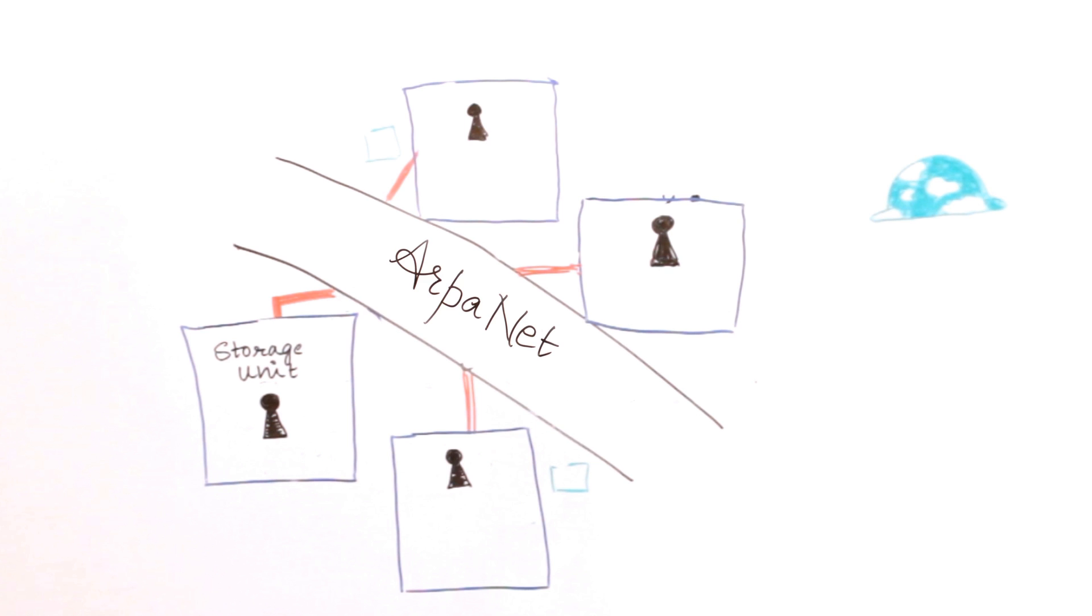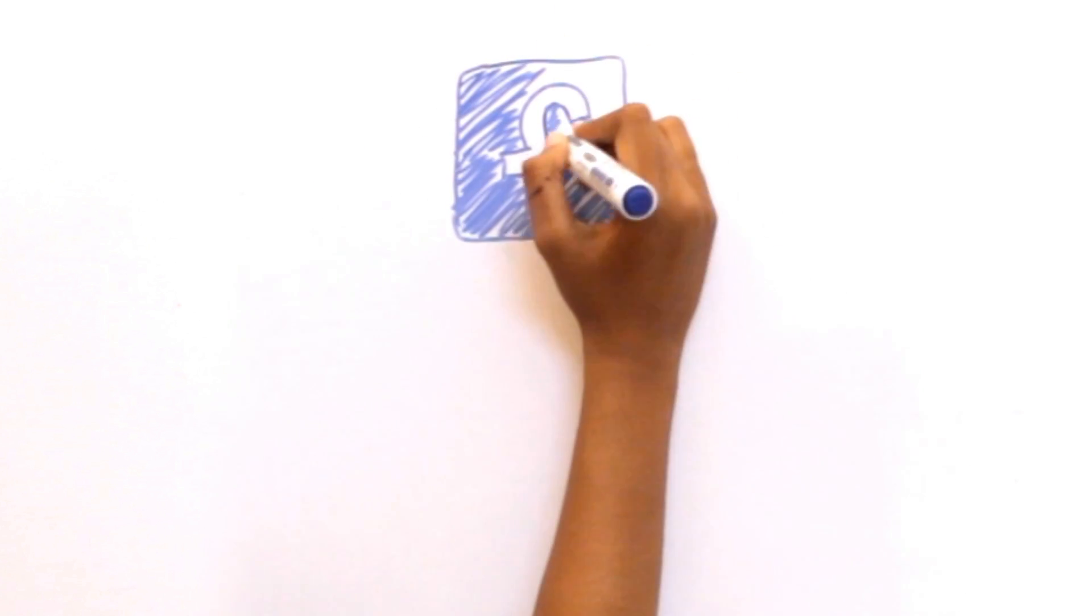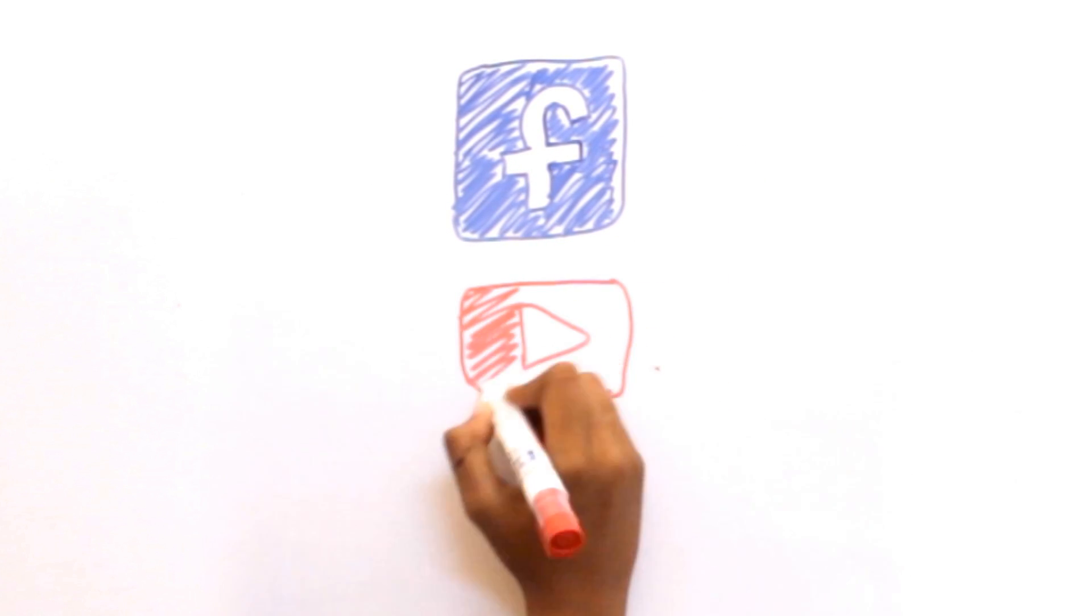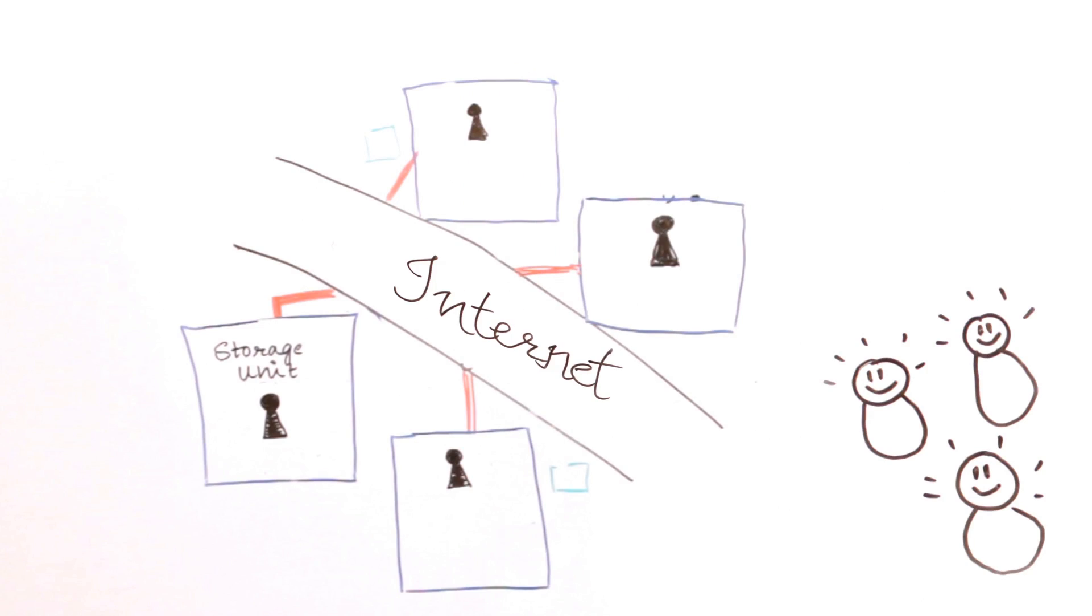Then eventually, common people became the part of this information exchange. So, servers were set up. These servers stored the data from different websites. Now, big websites like Facebook, YouTube were like those big farms which produced so much of information that they had their own independent servers. ARPANET was now upgraded to internet.